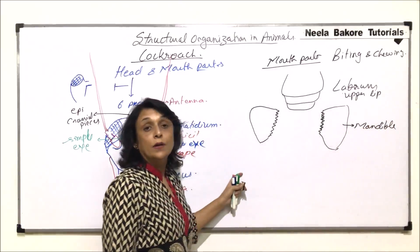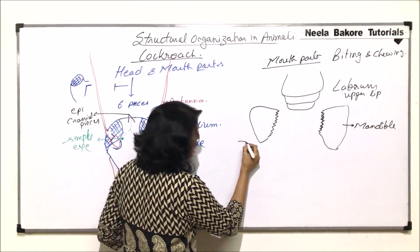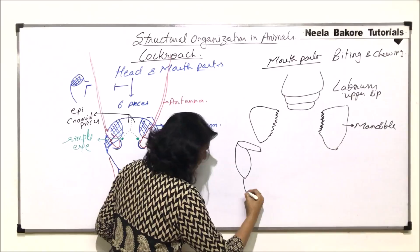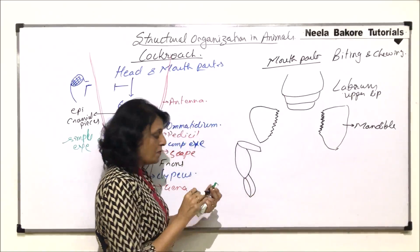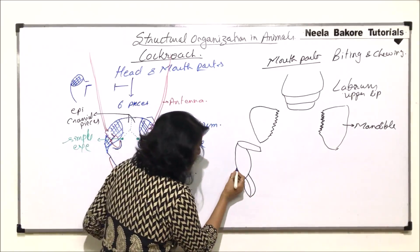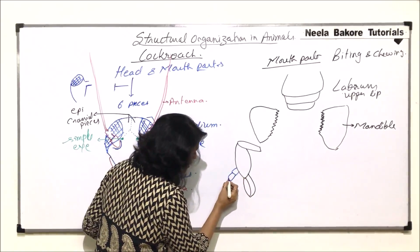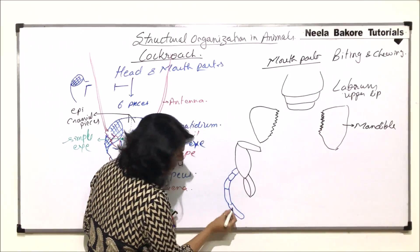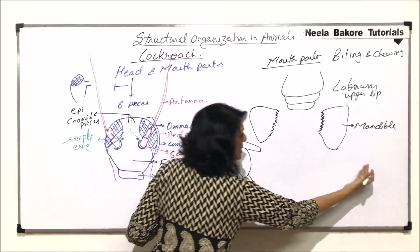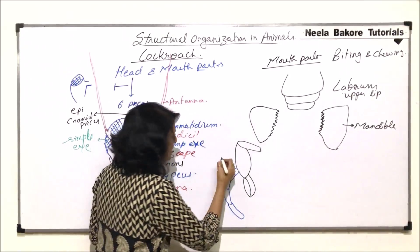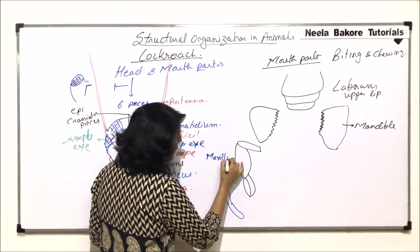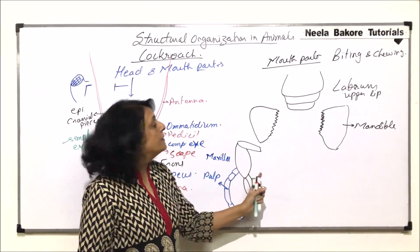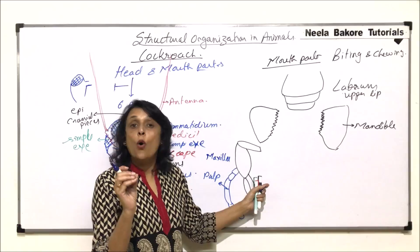Then there are the maxillae. Each maxilla has a few parts. Each maxilla has long strand-like structures called the maxillary palps, and each palp has five segments. One maxilla is on each side. This maxillary palp helps the insect to hold the food in position.